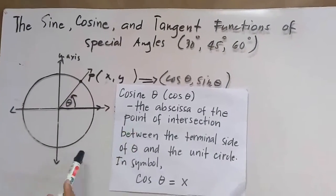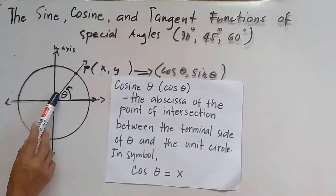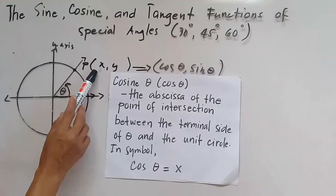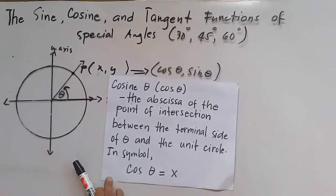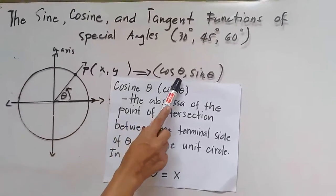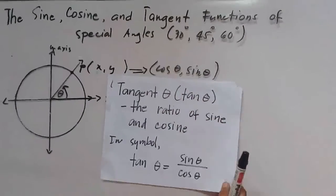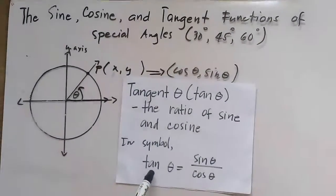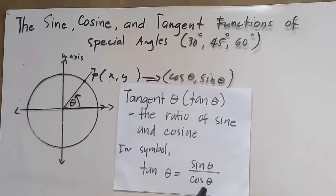Cosine theta is the abscissa of the point of intersection between the terminal side and the unit circle. In symbol, cosine theta is equal to x. In other words, the coordinates x, y could also be written as cosine theta, sine theta. Tangent theta is the ratio of sine and cosine. In symbol, tangent theta is equal to sine theta divided by cosine theta.